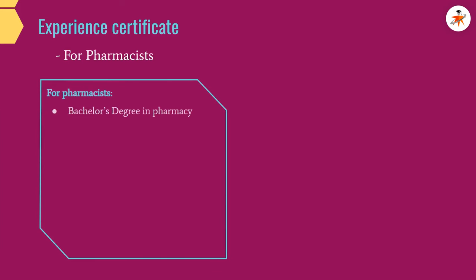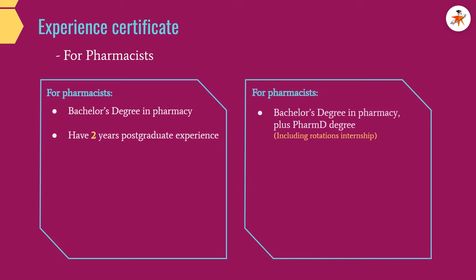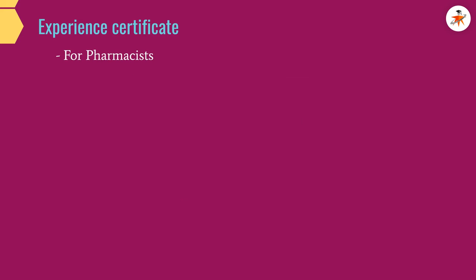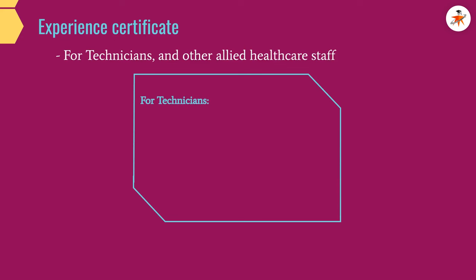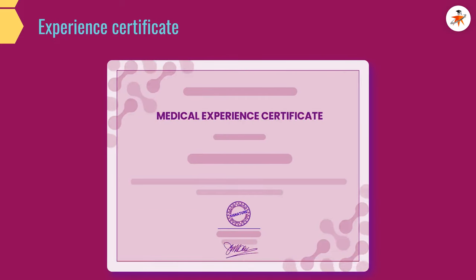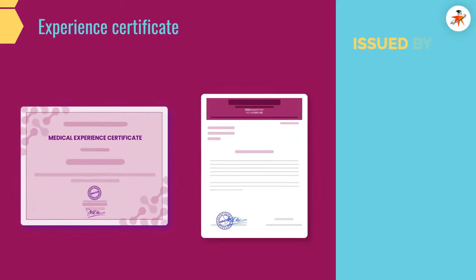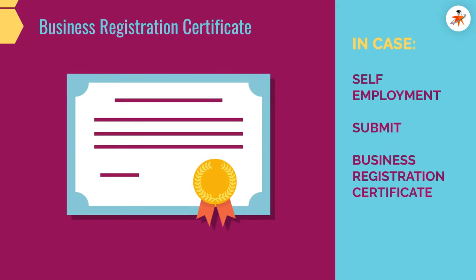For pharmacists with a bachelor's degree in pharmacy, two years postgraduate experience is required. For pharmacists with a bachelor's degree in pharmacy plus a PharmD degree, one year postgraduate experience is required. With a master's degree in pharmacy-related fields or equivalent, two years postgraduate experience is required, and candidates are exempted from the Prometric exam. For technicians and other allied healthcare staff with a valid bachelor's degree or diploma, at least two years experience is required. Experience certificates should be duly signed and stamped, have clear email and contact details on the letterhead, and must be issued by the human resources or administration department only. In case of self-employment, submit your business registration certificate.